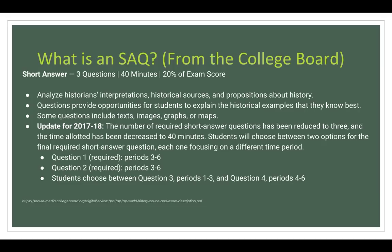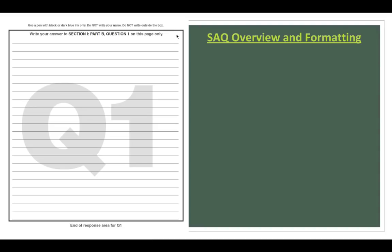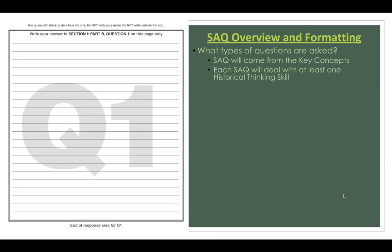Questions one and two will always be required because they are on periods three through six, and that comes from the College Board. So the SAQ overview and formatting — this is what it's going to look like when you actually sit for the SAQ. You can only write within the designated lines. Think of it like a competition with a boundary line — if you put one foot outside, you're done. Same thing here: if you write outside the line, it does not count. The types of questions generally come from the key concepts and deal with at least one historical thinking skill: causation, comparison, or continuity and change over time.